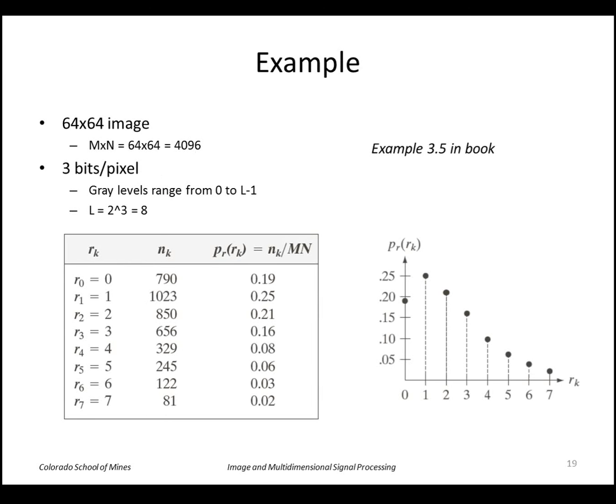Here's an example of a simple histogram. In this case we have a 64 by 64 image, so we've got 4096 values, here's the values here. We have the possible values range from 0 to 7, there are 3 bits, so this is what the histogram looks like.